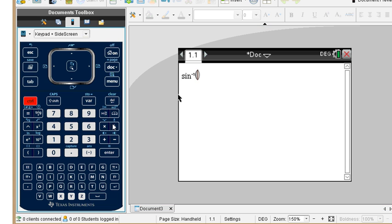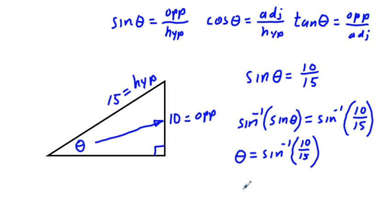And we're going to put in the fraction 10 over 15. And we do that, we get rounded to the nearest hundredth, 41.81 degrees. So we put our answer down here: theta equals approximately 41.81 degrees.